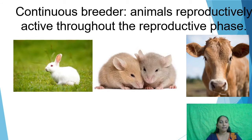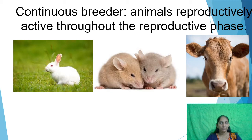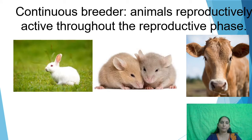Certain animals are known as continuous breeders. These animals are reproductively active throughout the entire reproductive phase — they are capable of reproduction throughout the year. Examples of continuous breeders include rabbits, rats, and cows.